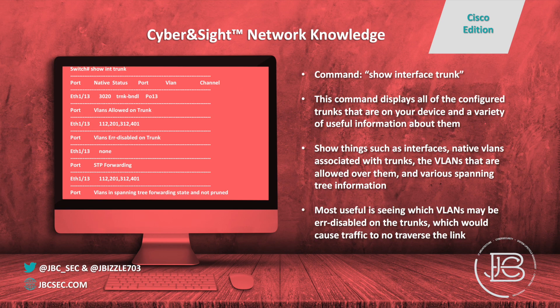Tip number seven deals with a command you will use quite a bit in switched environments. You're always going to have trunk interfaces going everywhere, and this is a very good command to run when troubleshooting why they might not be working. It shows you which interfaces are trunk interfaces, the native VLANs associated with them, the VLANs allowed over them, and some spanning tree information. The most useful thing from show interface trunk is looking to see if you have any error-disabled VLANs on the trunks — sometimes traffic fails not because of a native VLAN mismatch, but because the VLAN itself is error-disabled.